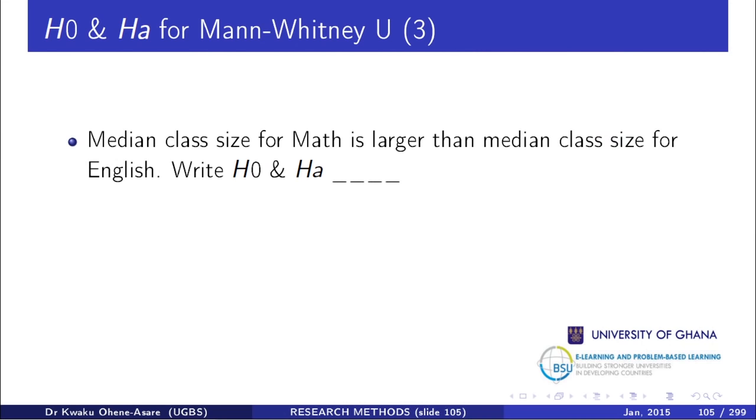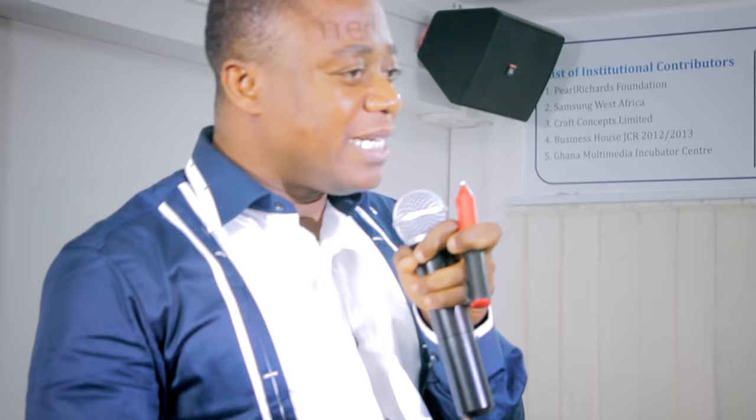Now try this: the median class size for Math is larger than the median class size for English. Write the null and alternative hypothesis. The null hypothesis is M1 less than or equal to M2, and the alternative is M1 greater than M2.